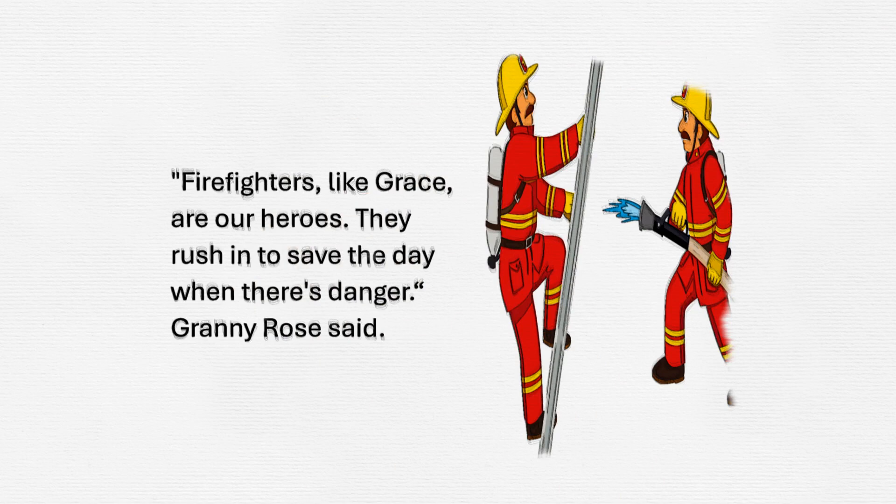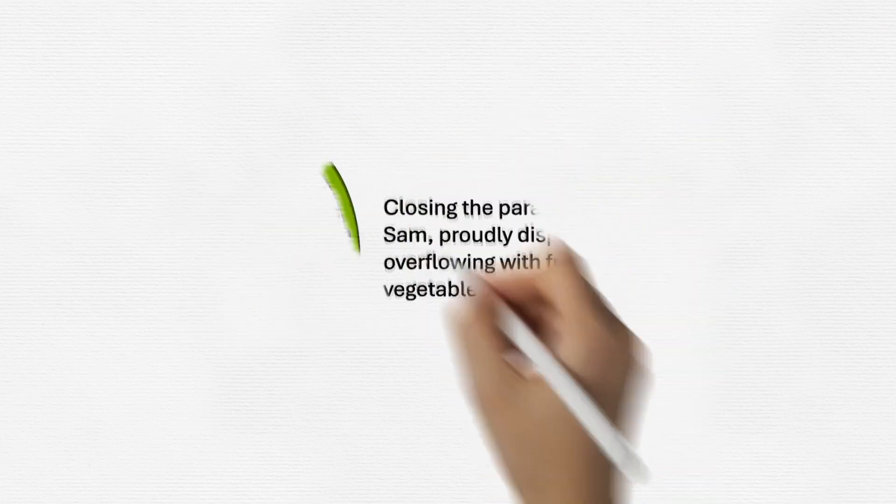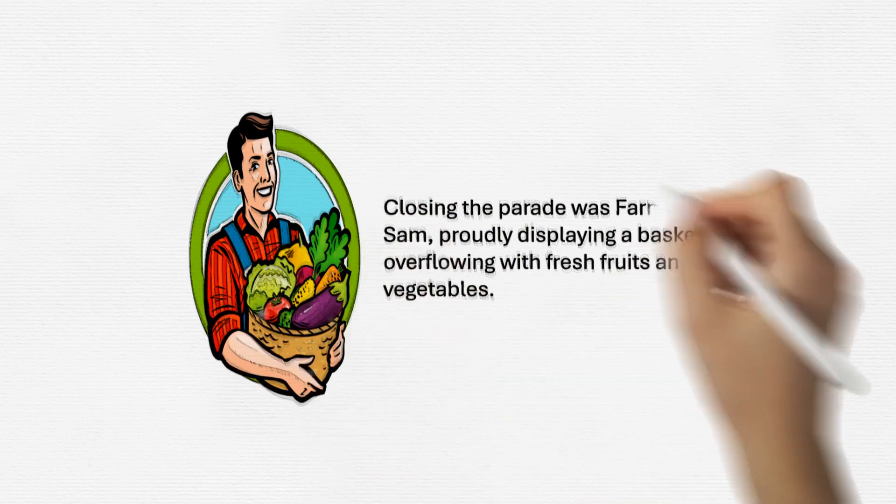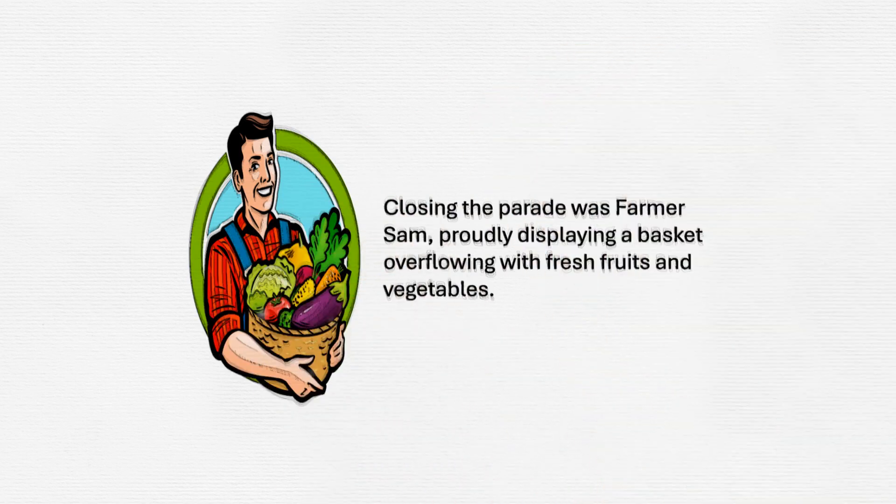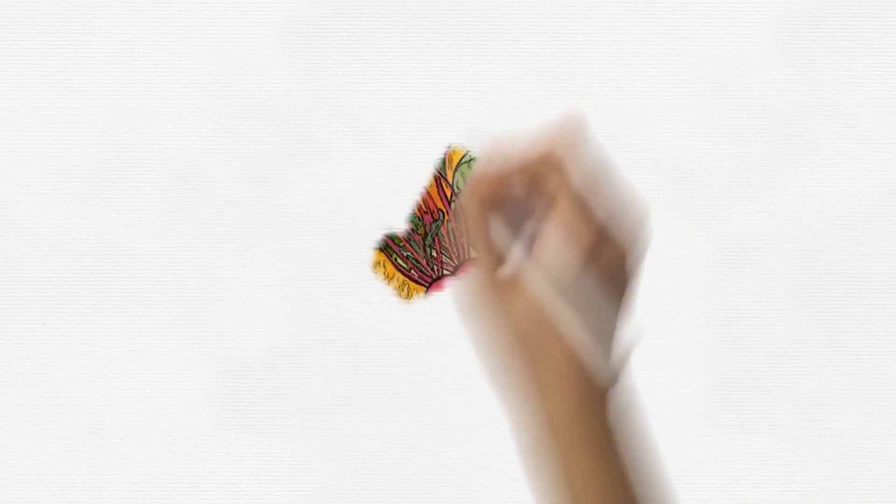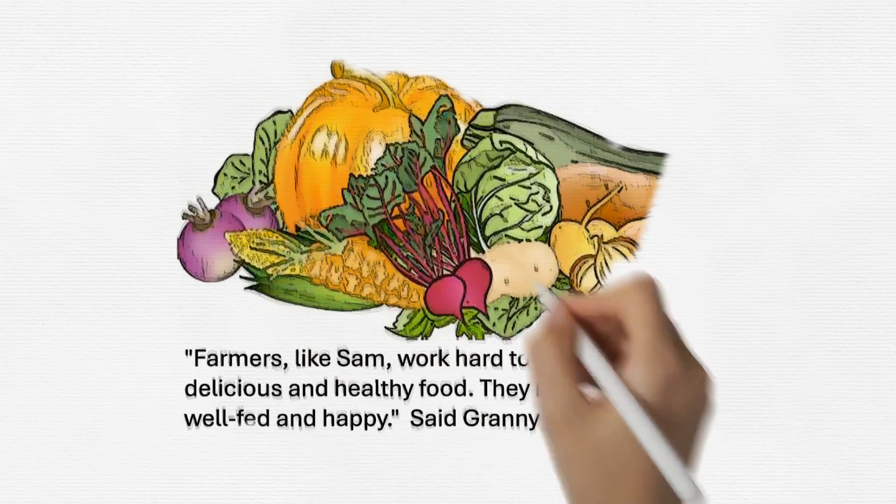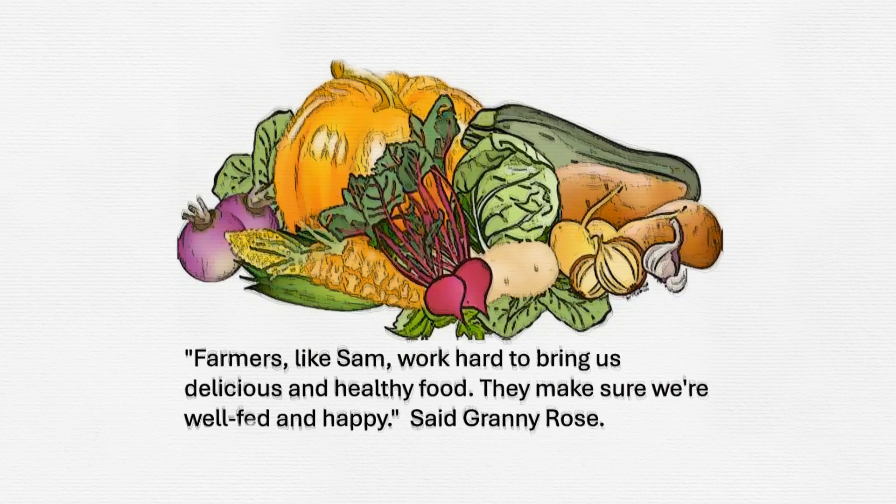Farmer Sam's harvest basket. Closing the parade was Farmer Sam, proudly displaying a basket overflowing with fresh fruits and vegetables. 'Farmers, like Sam, work hard to bring us delicious and healthy food. They make sure we're well fed and happy,' said Granny Rose.